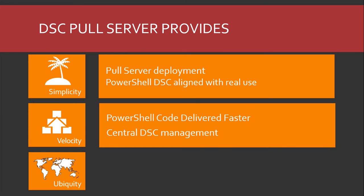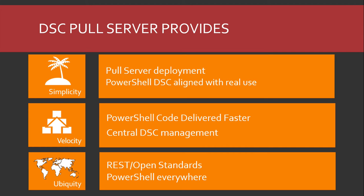The intent is to make your life more simple and let you move faster. If you have CI integration systems where you check stuff into source code, it does your tests, and if they pass you just dump it up to the pull server and clients go get the configurations, pull them down, and all is good. DSC implements an open protocol and standards, so whether you're on Linux or Windows with a DSC client, both can talk to the pull server because it's over a REST OData endpoint. If you want to create your own client to talk to the pull server, you can do that as well.